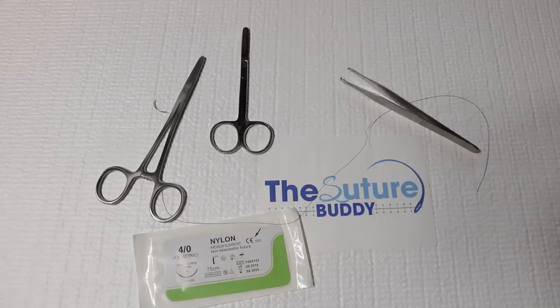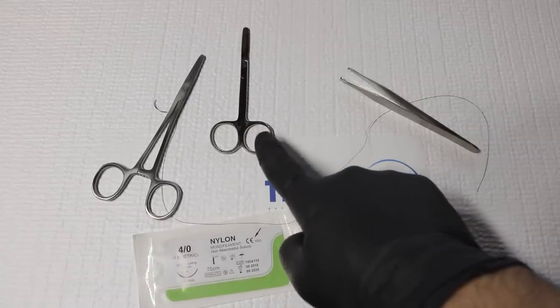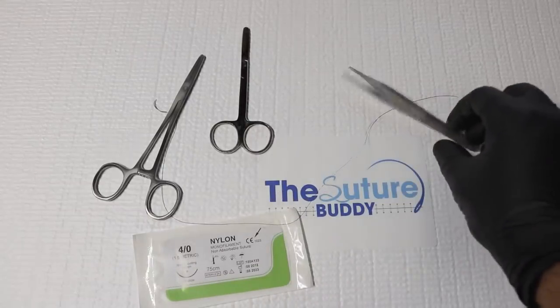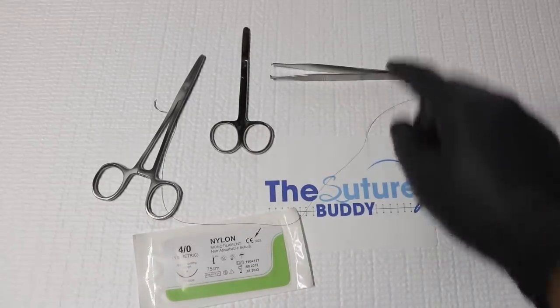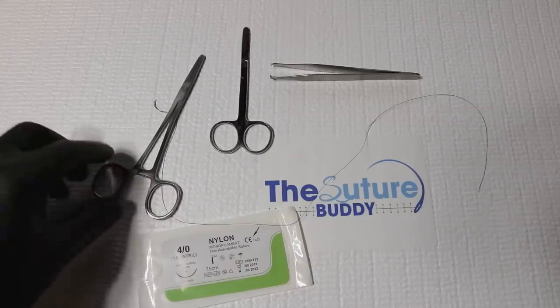Let's start talking about these tools. We have the needle holder, the scissors, and the tissue forceps, also the needle itself with the suture material. Let's go over each one individually. First thing I want to talk about is